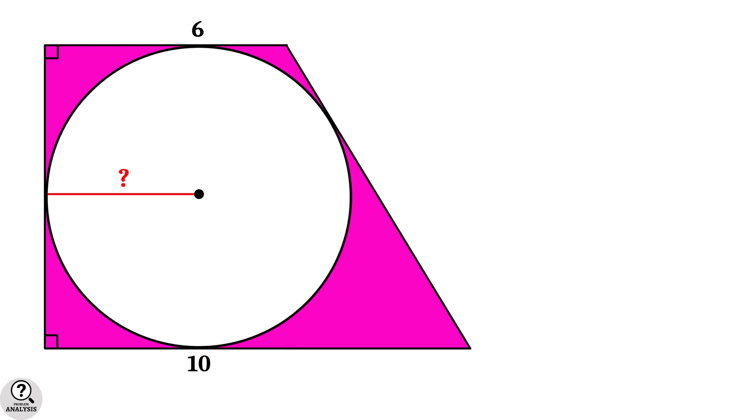Now observe our diagram. Suppose the radius of the circle is R units. Now, note that height of the trapezoid is equal to diameter of the circle, which is 2R. That is height is equal to 2 times R.